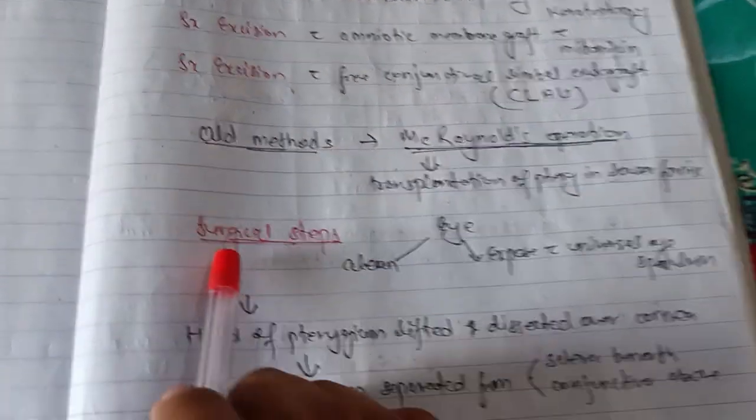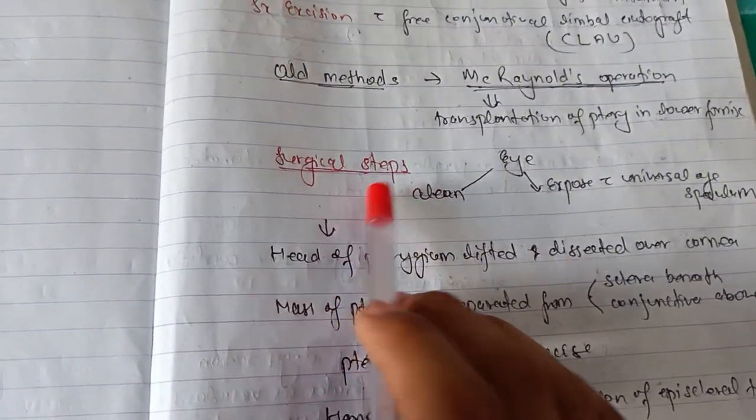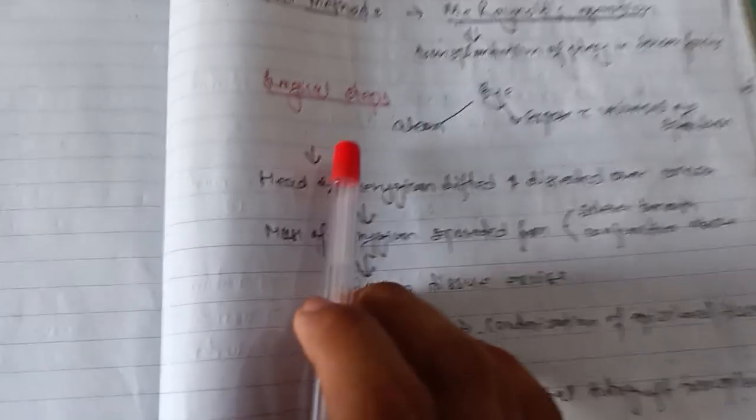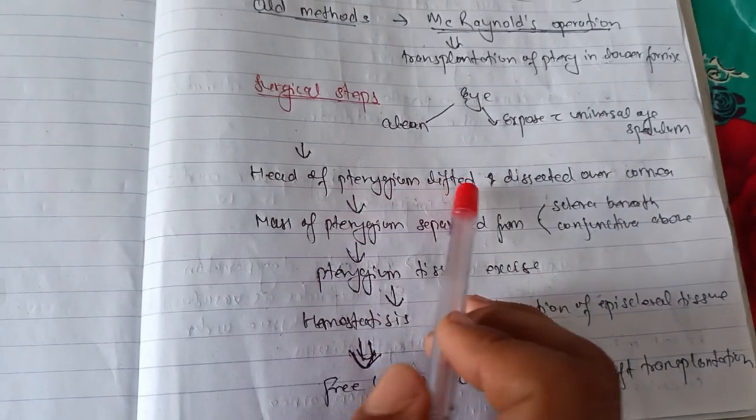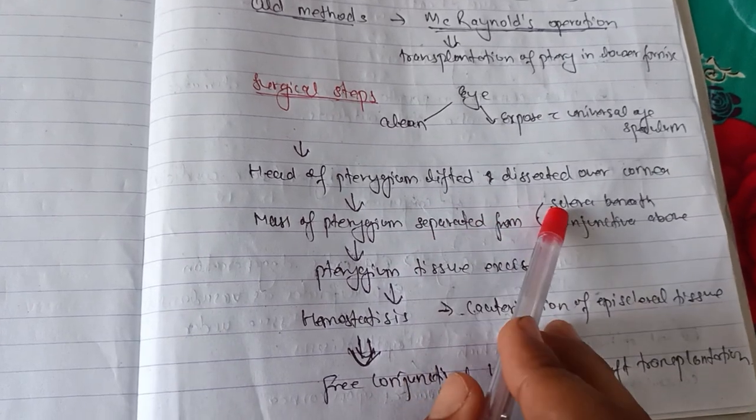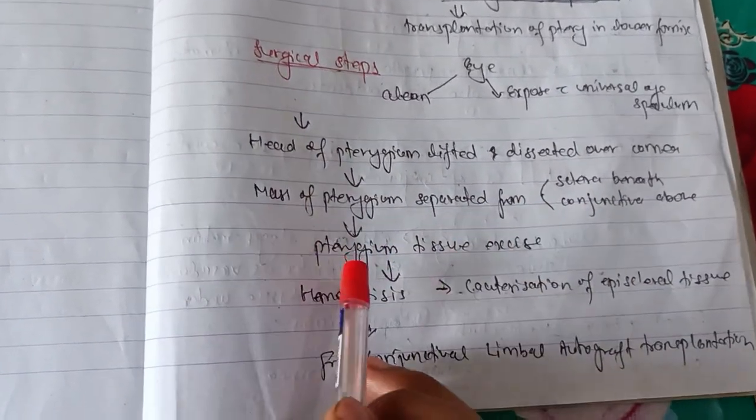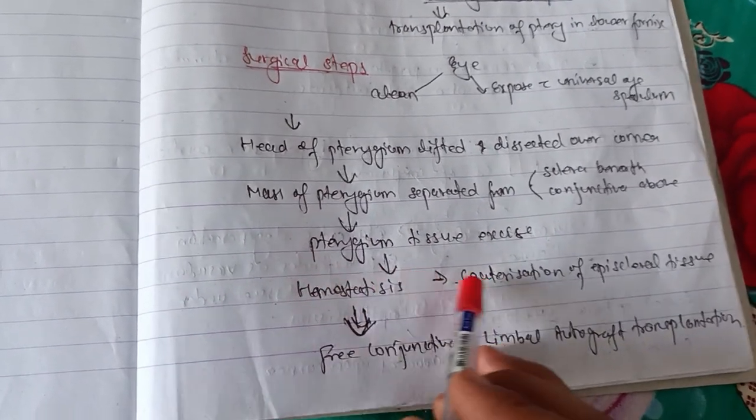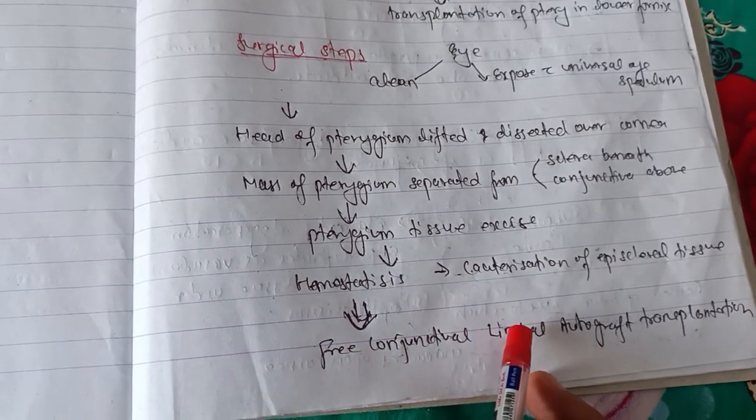Talking about surgical steps: first of all, the eye is cleaned and exposed with universal eye speculum. In the first step, the head of pterygium is lifted and dissected over the cornea. The mass of pterygium is separated from sclera obliquely and conjunctiva above, and pterygium tissue is excised. After excision, there is hemostasis by cauterization of episcleral tissue. Finally, free conjunctival limbal autograft transplantation is done.